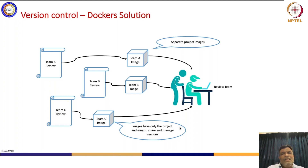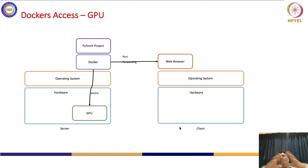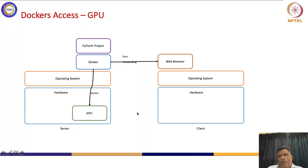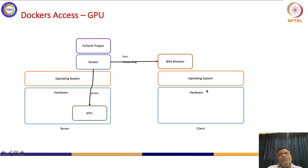This is how Docker gives you a lightweight solution compared to virtual machines. For GPU access, in a server where you have your Docker image running, the OS and hardware give you access to the GPU. Through port forwarding from your own system, you can run this Docker on the remote hardware and project it to your own web browser, allowing you to work with Jupyter Notebook and many other tools.